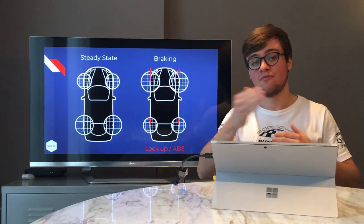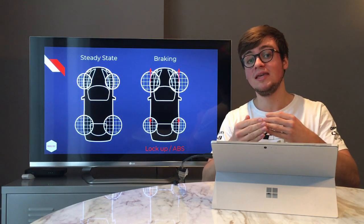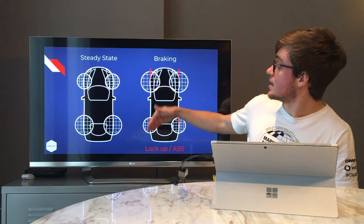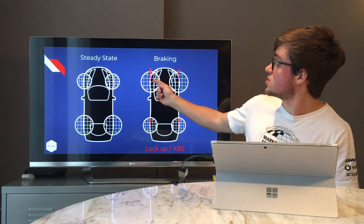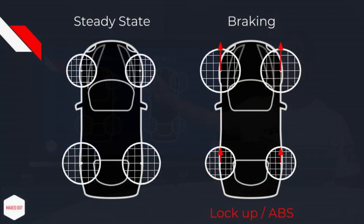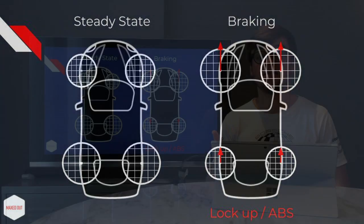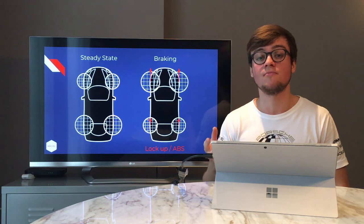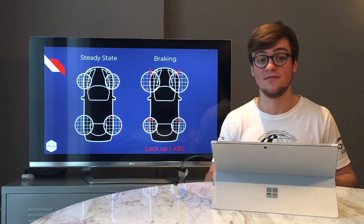We can apply the same logic to hard braking. Before we had a smooth braking maneuver; now we push the brake pedal much harder. The car moves weight to the front, but the pressure is just too much — the red arrows go beyond the edge of the circle, meaning we're going to lock the wheels. If you have ABS, which most cars do today, the ABS will start to work.